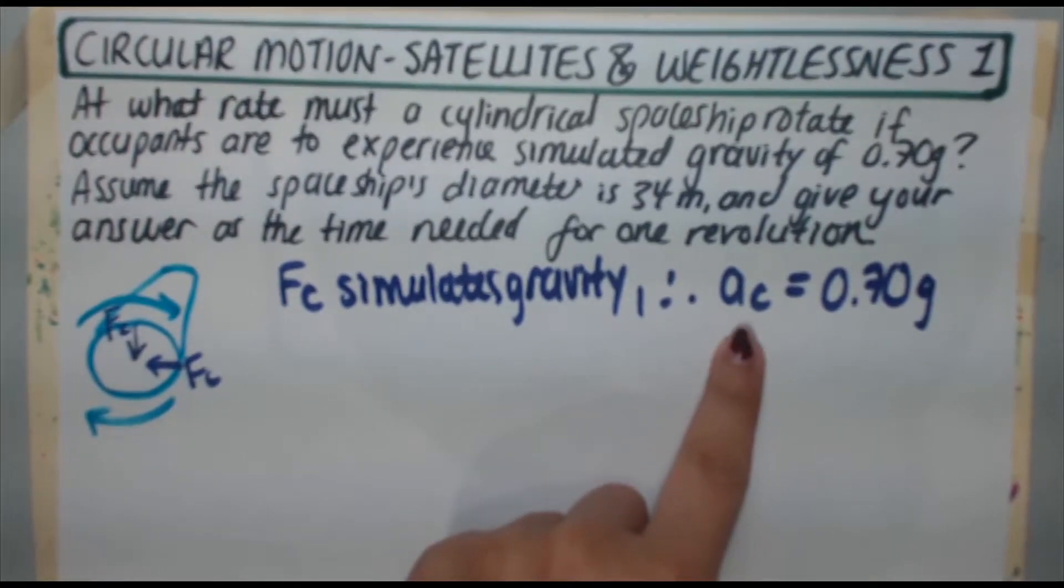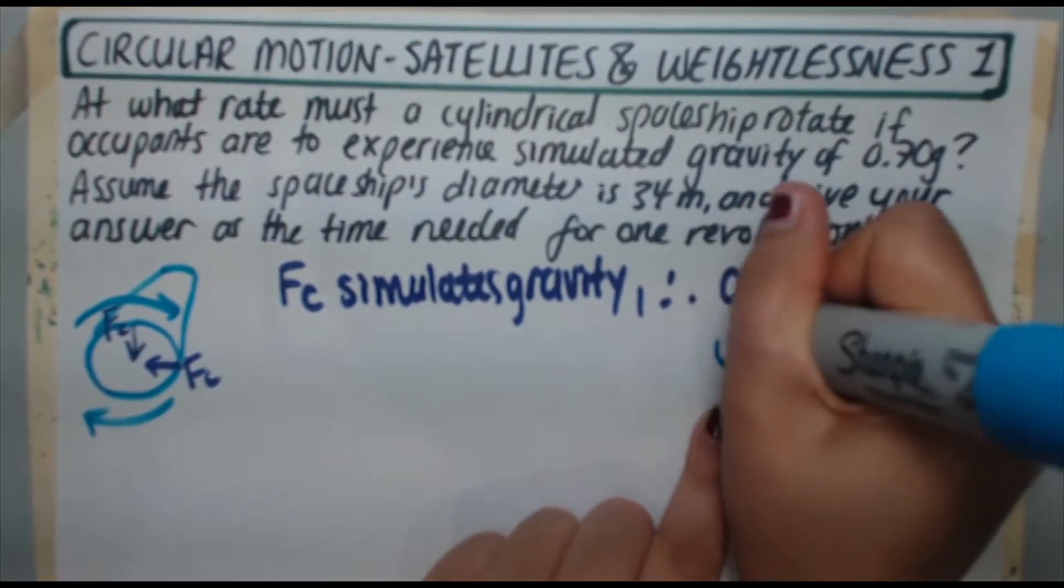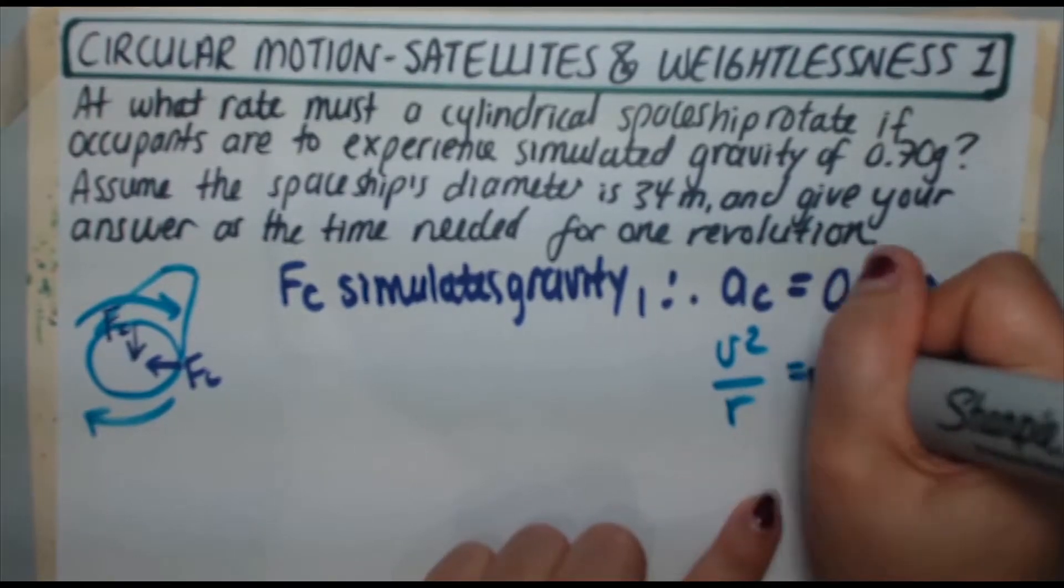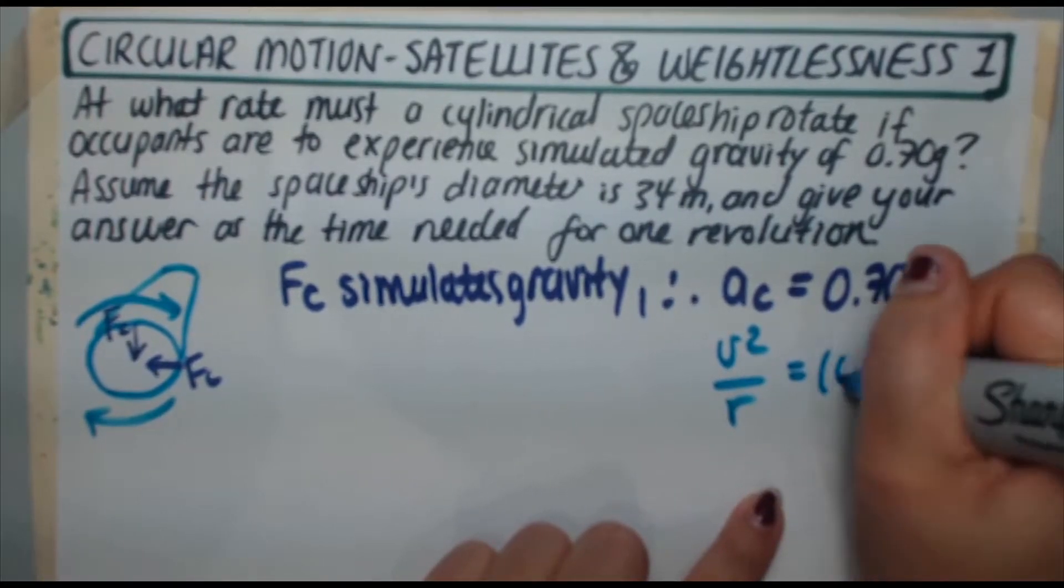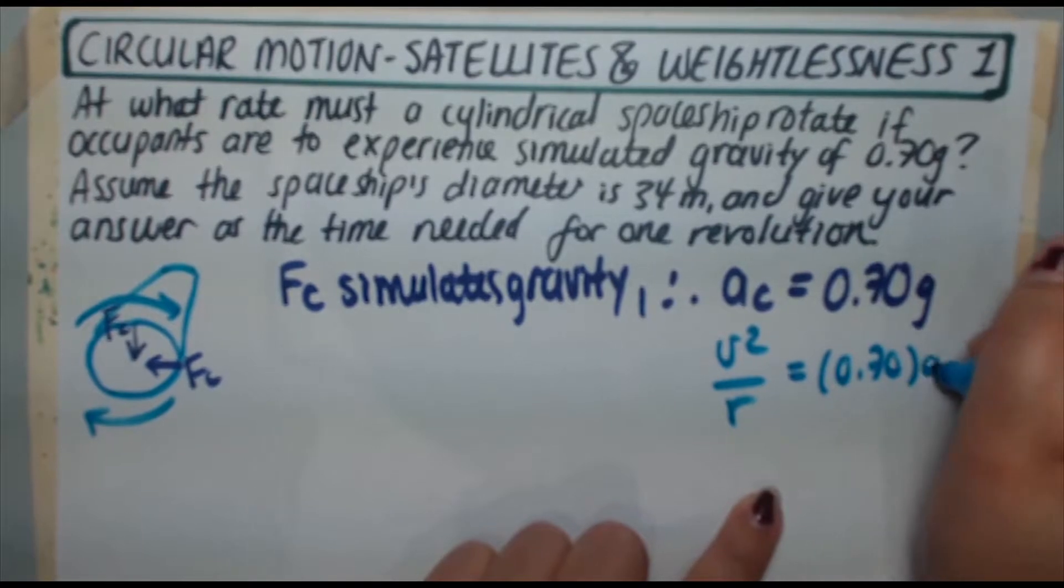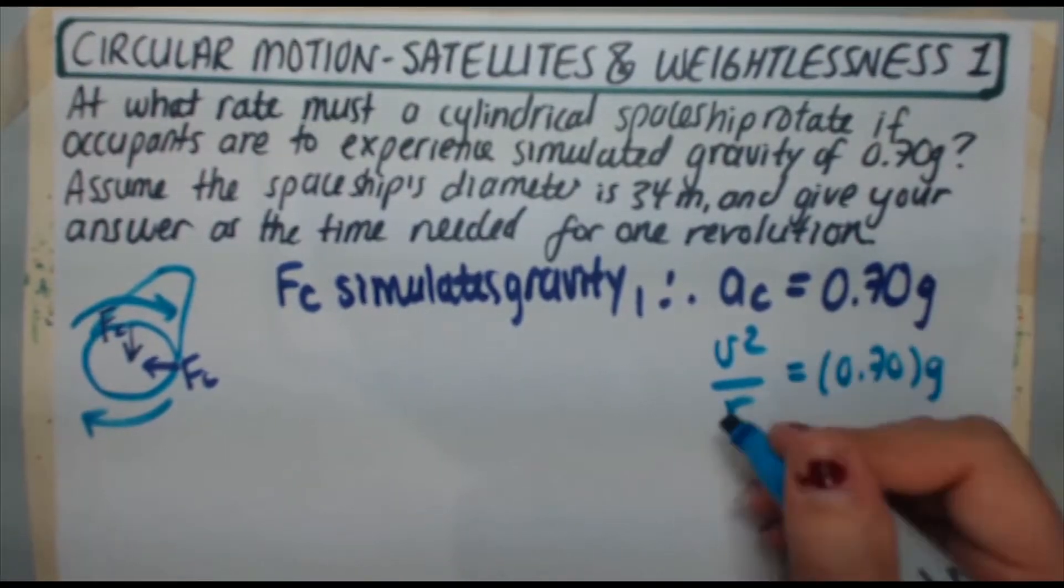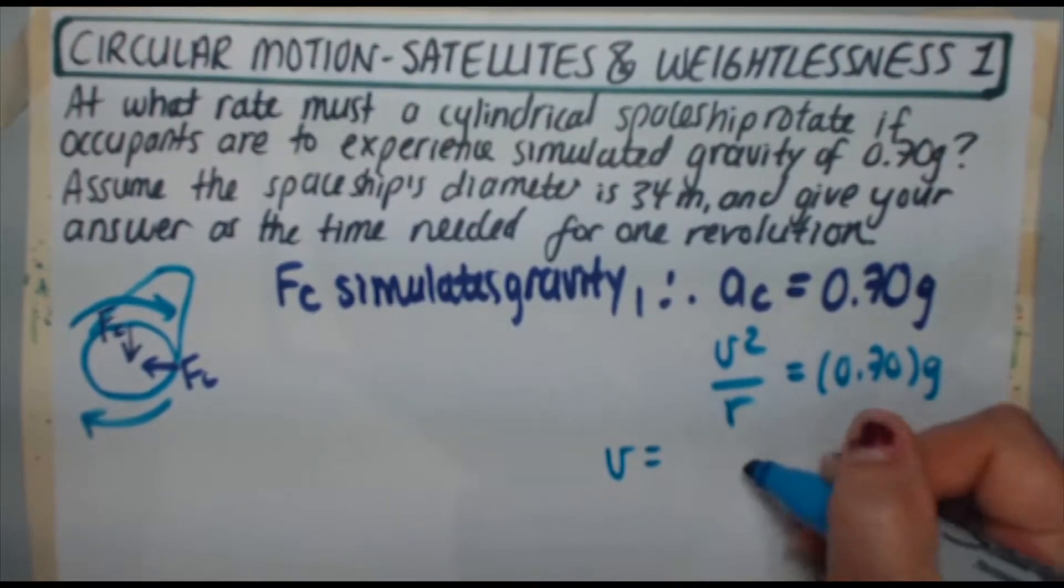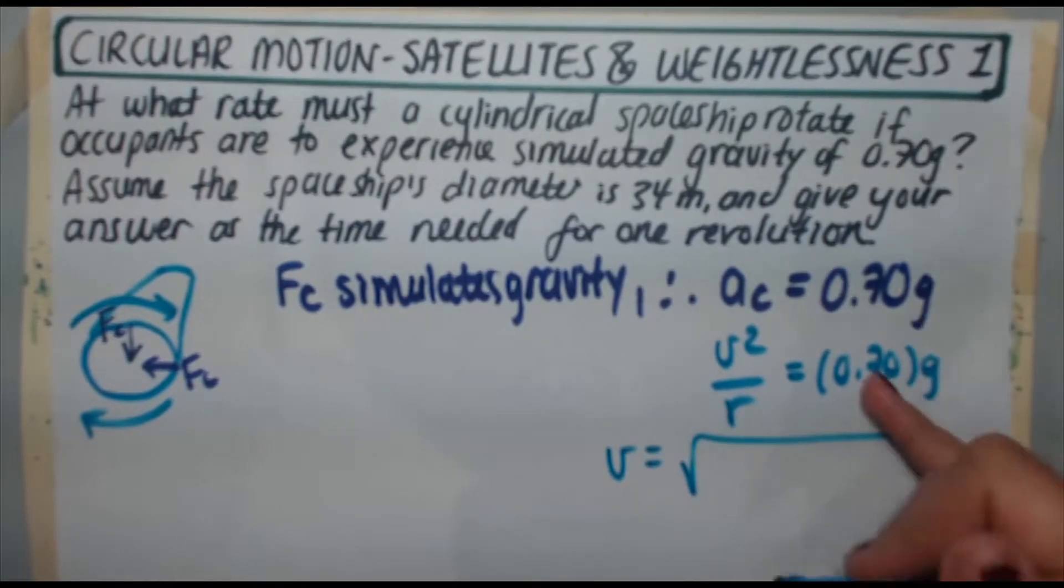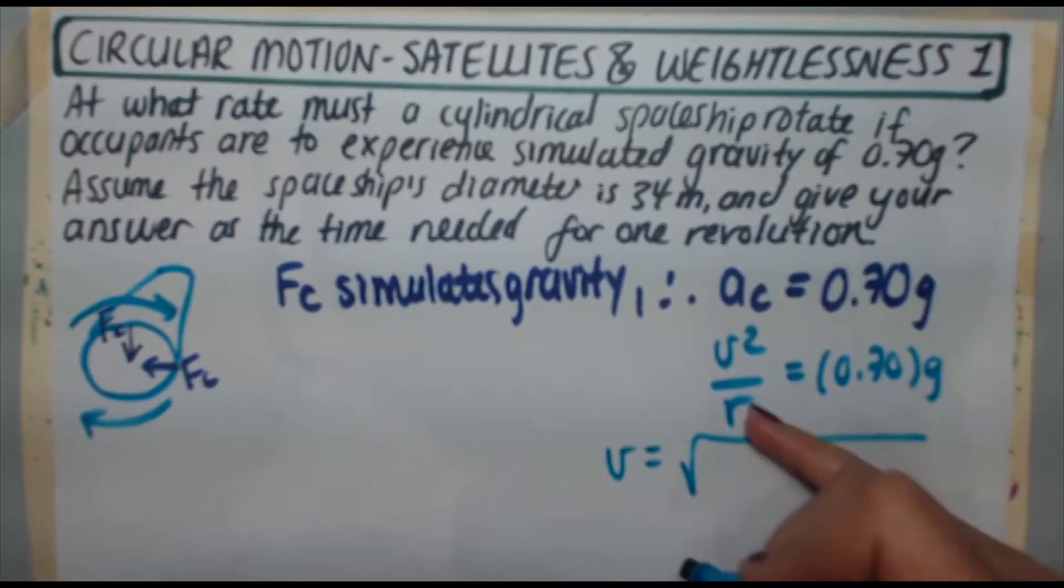Now we know that centripetal acceleration is v squared over r, so v squared over r is equal to 0.70g. So v is equal to the square root of r times 0.70 times g.